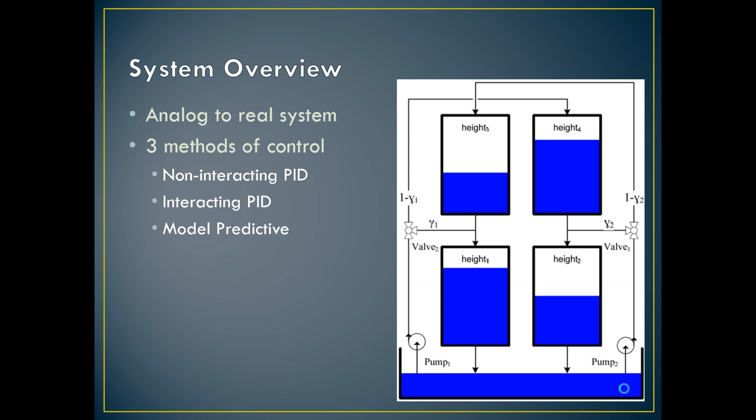This four reservoir system basically has two tanks above, tank three and tank four, and they gravity drain into tanks one and two. They're supplied by pumps one and two. Pump one goes into tank four and pump two goes into tank three, but there's a disturbance.